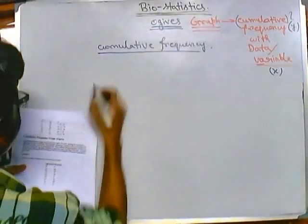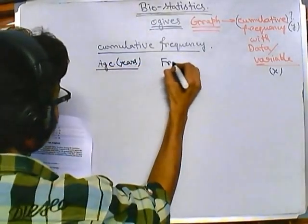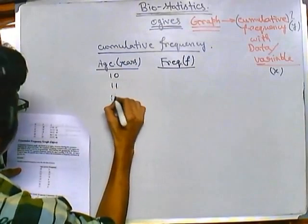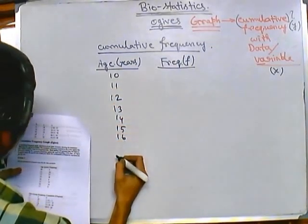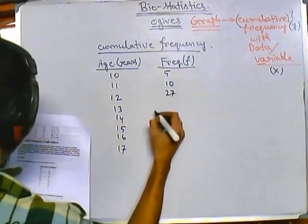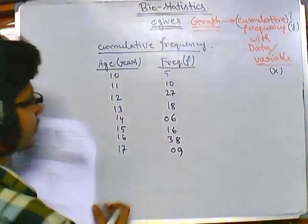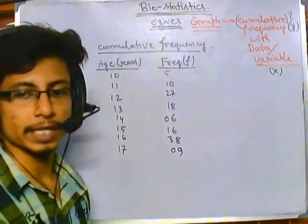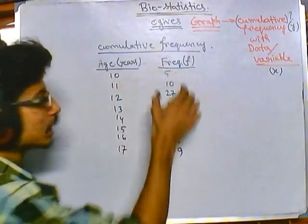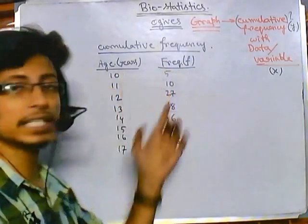Let me give you a dataset. The data we have is age in years and frequency (absolute frequency, small f). The ages are 10, 11, 12, 13, 14, 15, 16, 17, and the corresponding frequencies are 5, 10, 27, 18, 6, 16, 38, and 9. This is the absolute frequency — the number of times each age repeats. Age 10 repeats 5 times, and age 11 repeats 10 times.